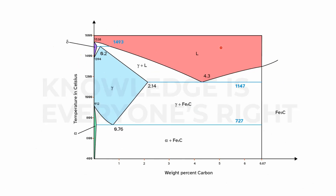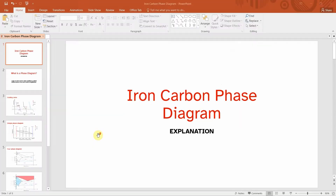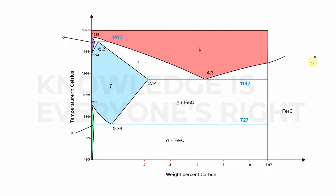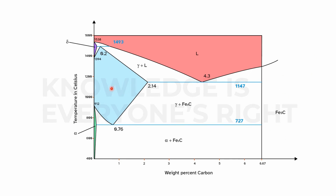Between two distinct phases there will always be a mixture of both. For example, between gamma and liquid there is a gamma-plus-liquid region. Between alpha and gamma there is a mixture of alpha and gamma. Similarly, between gamma and Fe3C there is a gamma-plus-Fe3C region, and between alpha and Fe3C there is an alpha-plus-Fe3C region.